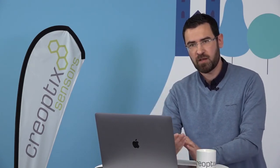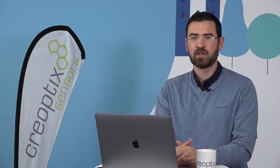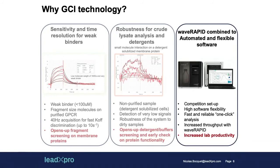There are a couple of other features of these instruments which are also very useful for us. For example, in the middle of the slide you can see the robustness for crude lysate analysis — that means we can work with non-purified sample. This is quite important because it saves time when screening for solubilization conditions of membrane proteins, and it opens up the way for detergent and buffer screening and early checks on protein functionality.